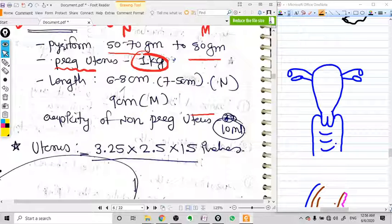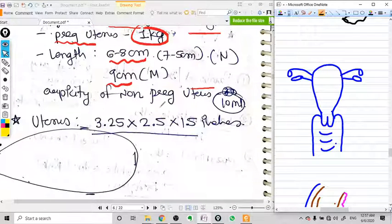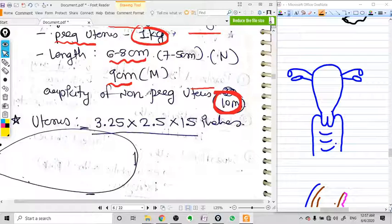What should be the normal length of the uterus? It is 6 to 8 centimeters in case of nullipara and 9 centimeters in case of multipara. What is the capacity of non-pregnant uterus? 10 ml.